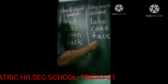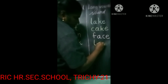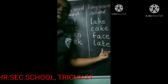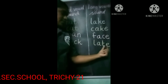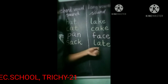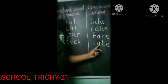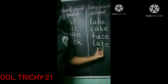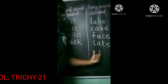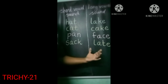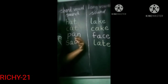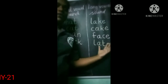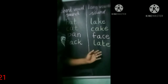L-A-T-E, late. Here this letter A makes its name — A. So it's a long vowel sound. I hope you all understand the concept. Don't forget the rules: when the vowel says its sound, it's a short vowel; when the vowel says its name, it's a long vowel. Practice at home, kids. Bye!